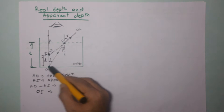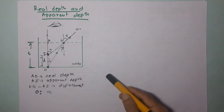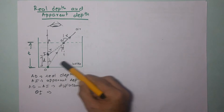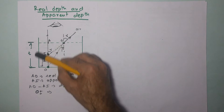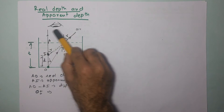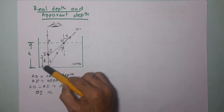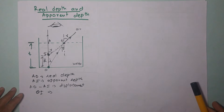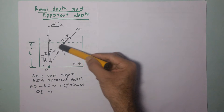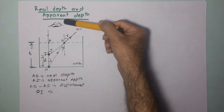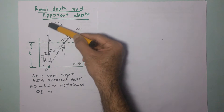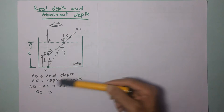Let us say we have a container filled with water up to depth t, and there is an object O placed inside it. The eye is above, looking at this object from the top. This concept of real depth and apparent depth comes into play when you are looking at an object placed inside a denser medium from a medium which is rarer — the eye is in the rarer medium and the object is in the denser medium.